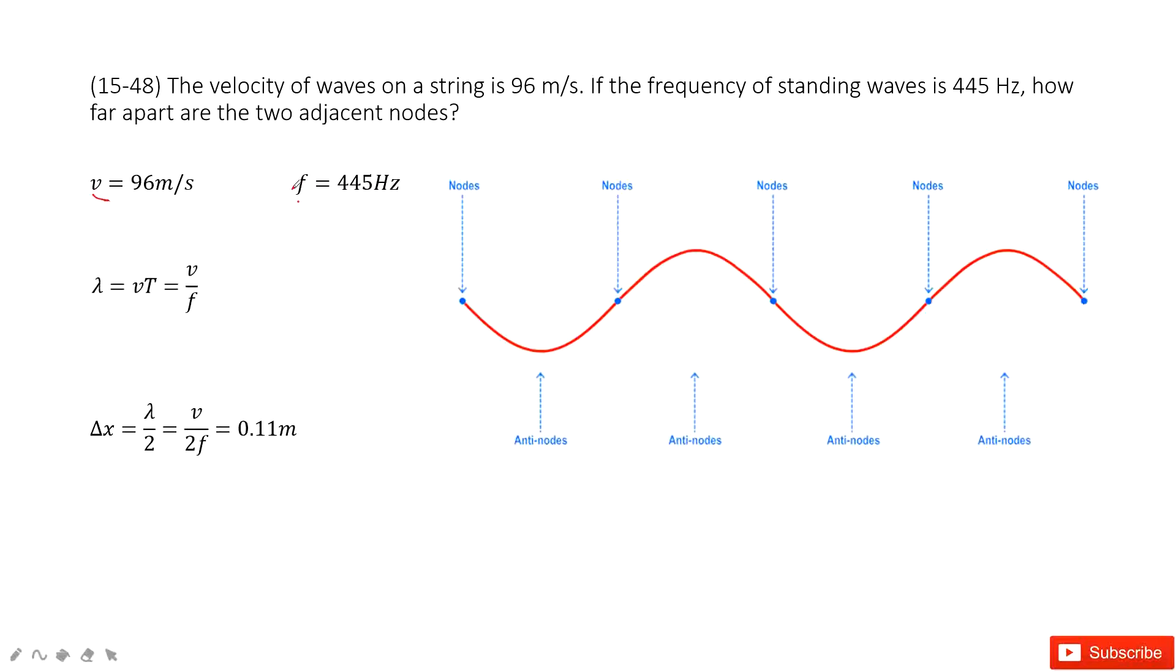Now we can see for the standing waves, it looks like this one. This part we call nodes, right? This part nodes, this part anti-nodes.